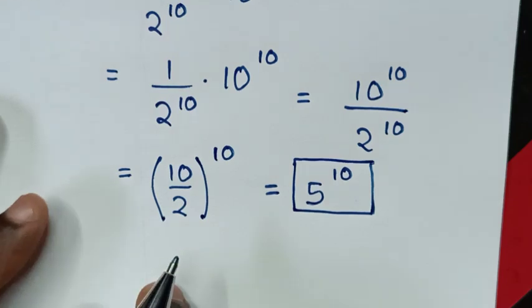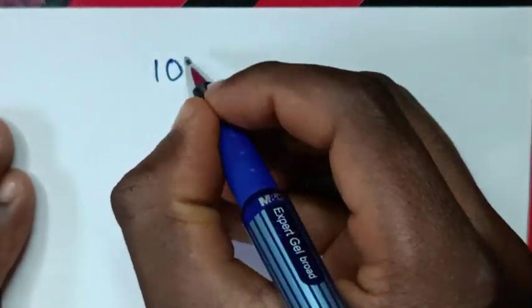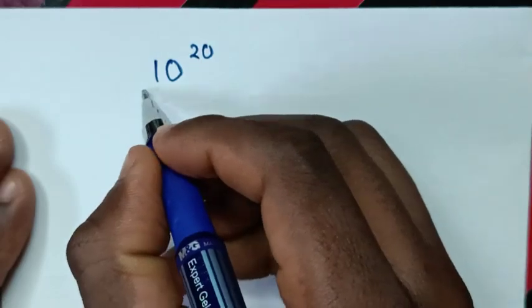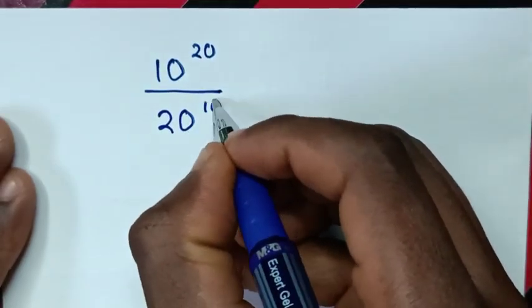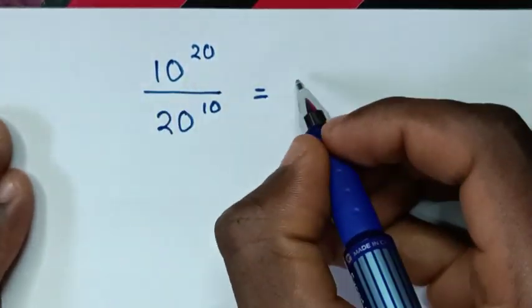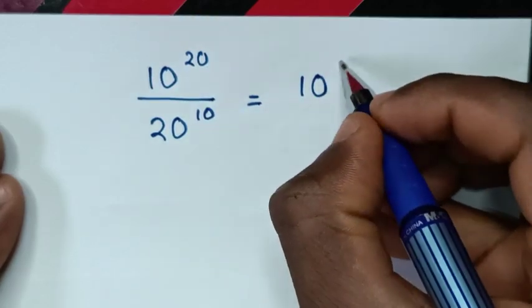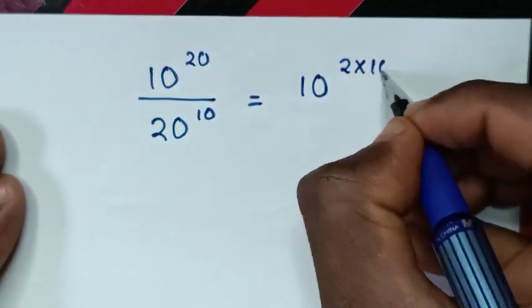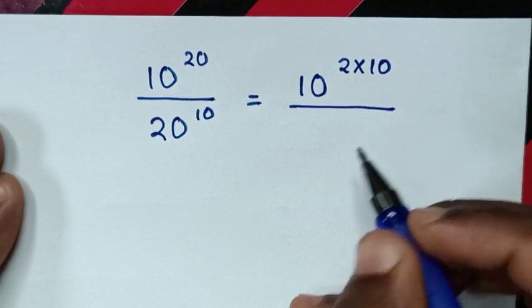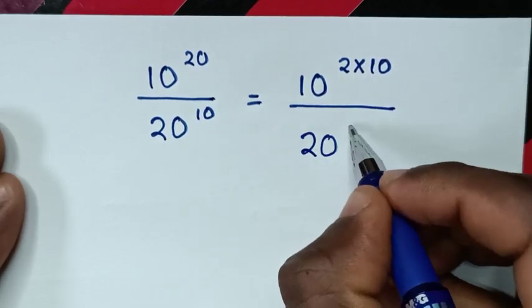Or, to solve in another method. From our problem, which is 10 power of 20 over 20 power of 10. So it will be equal to — this base of 10, then from power of 20, is the same as 2 times 10 — then over this exponent 20 power of 10.